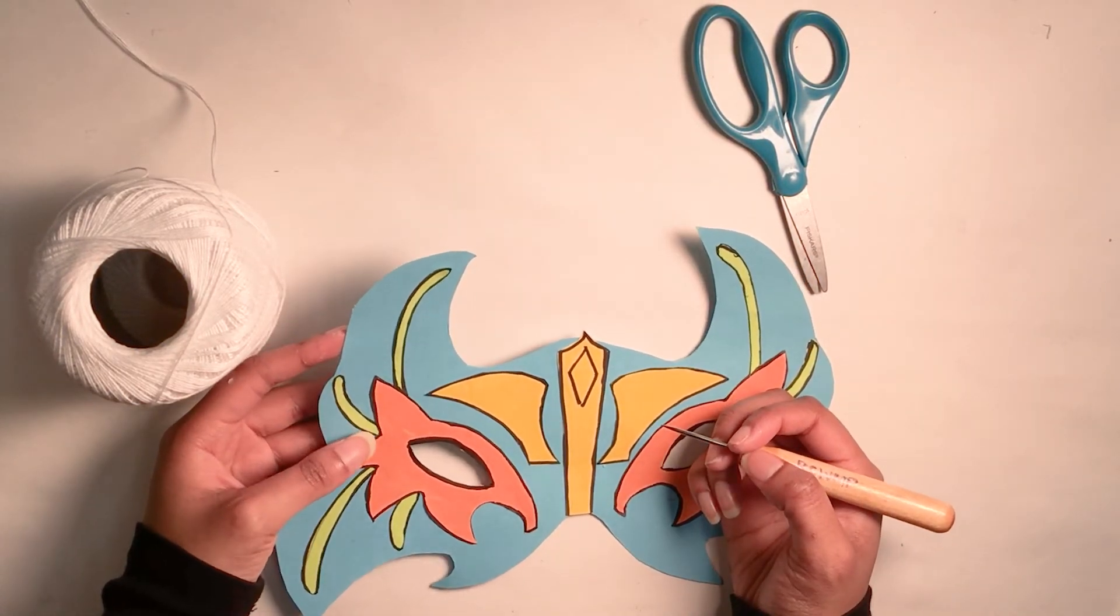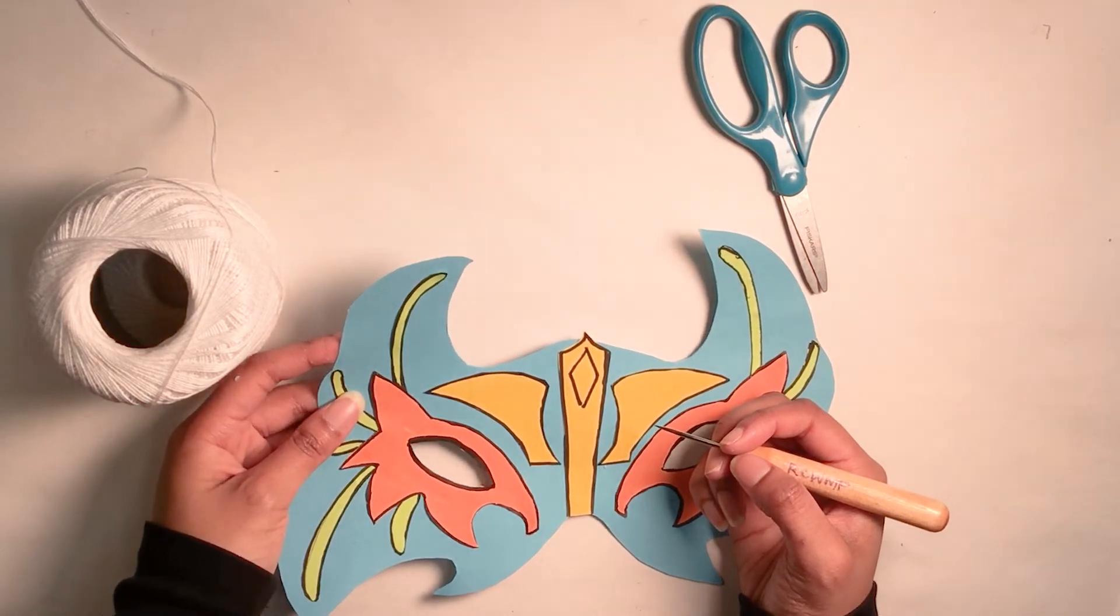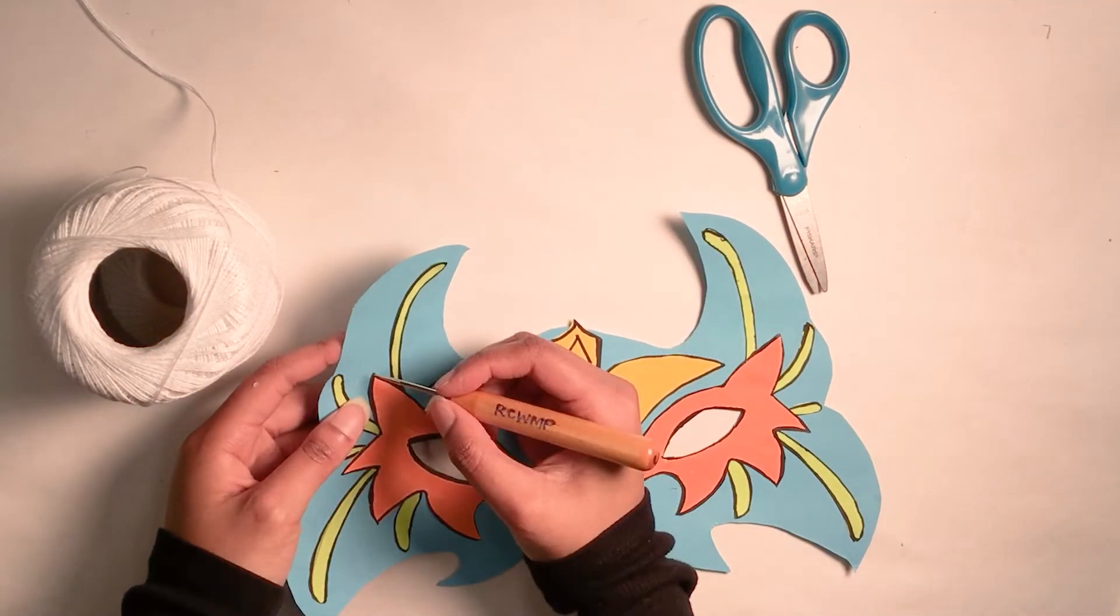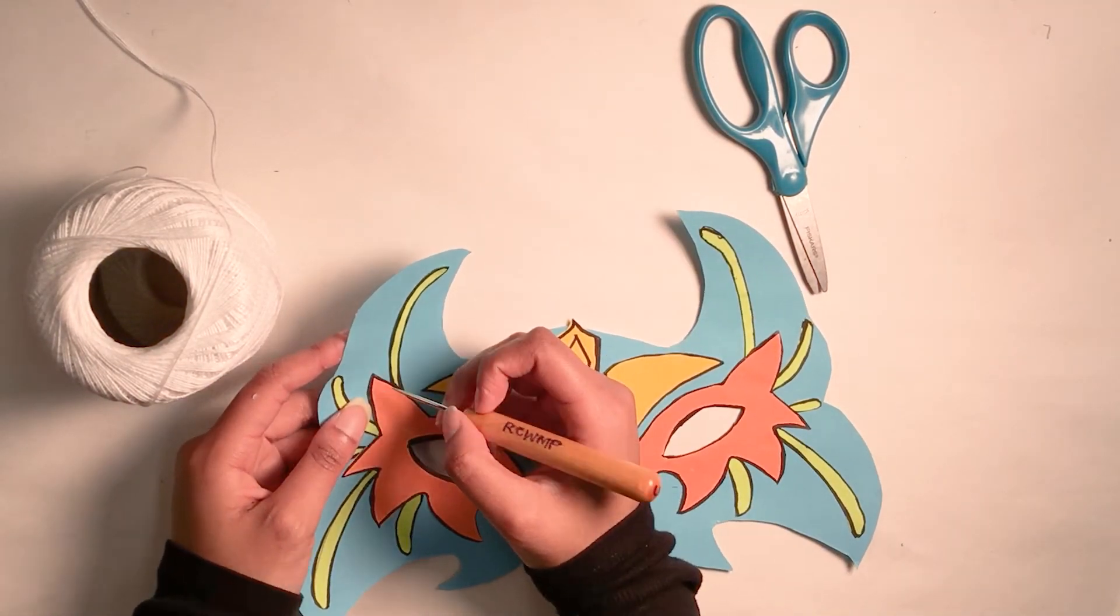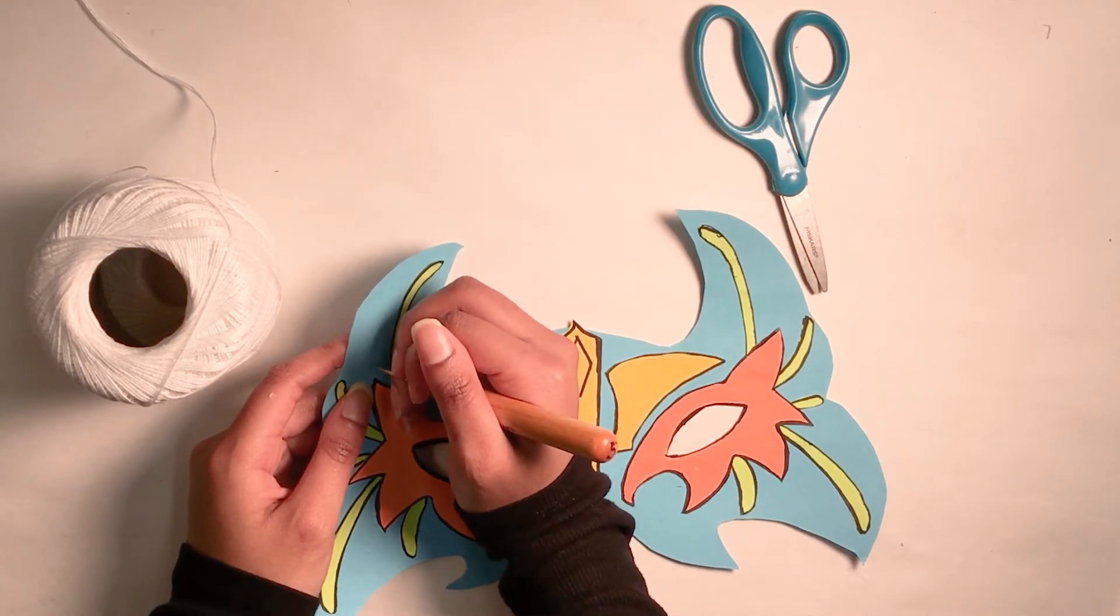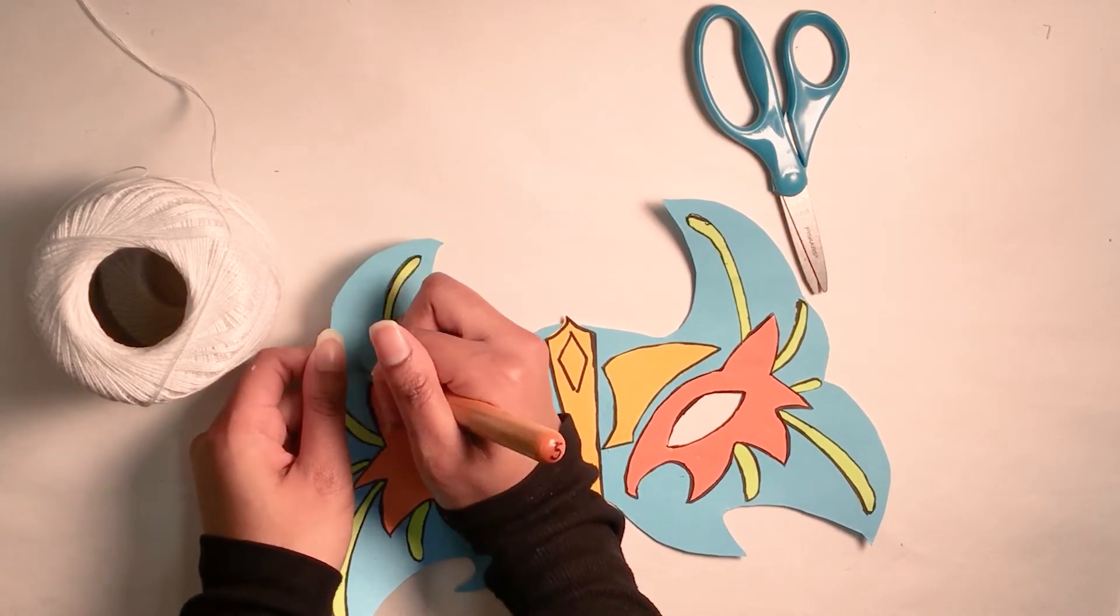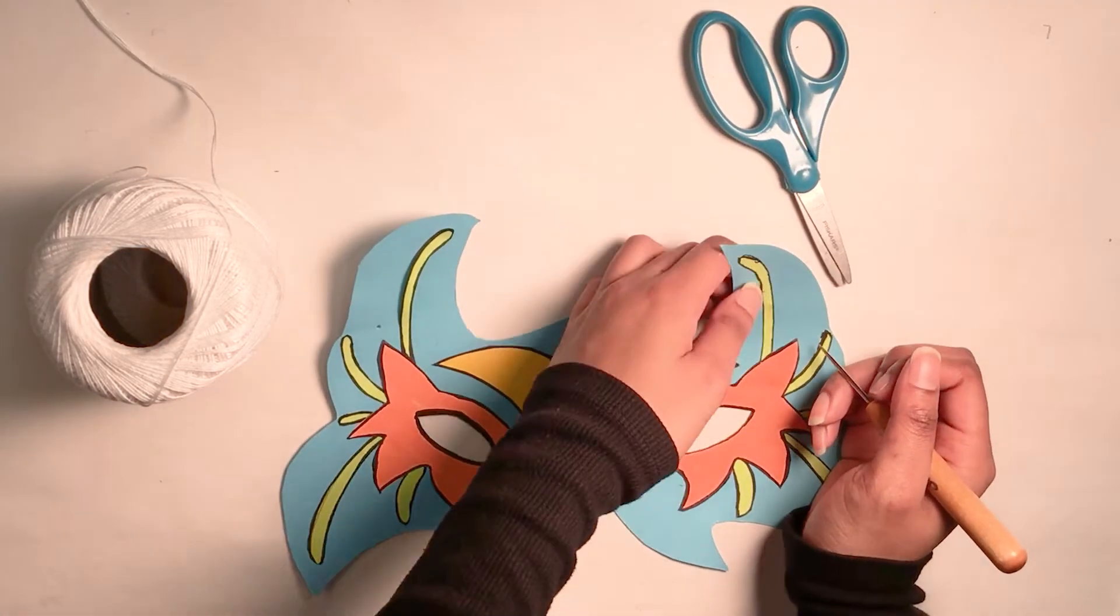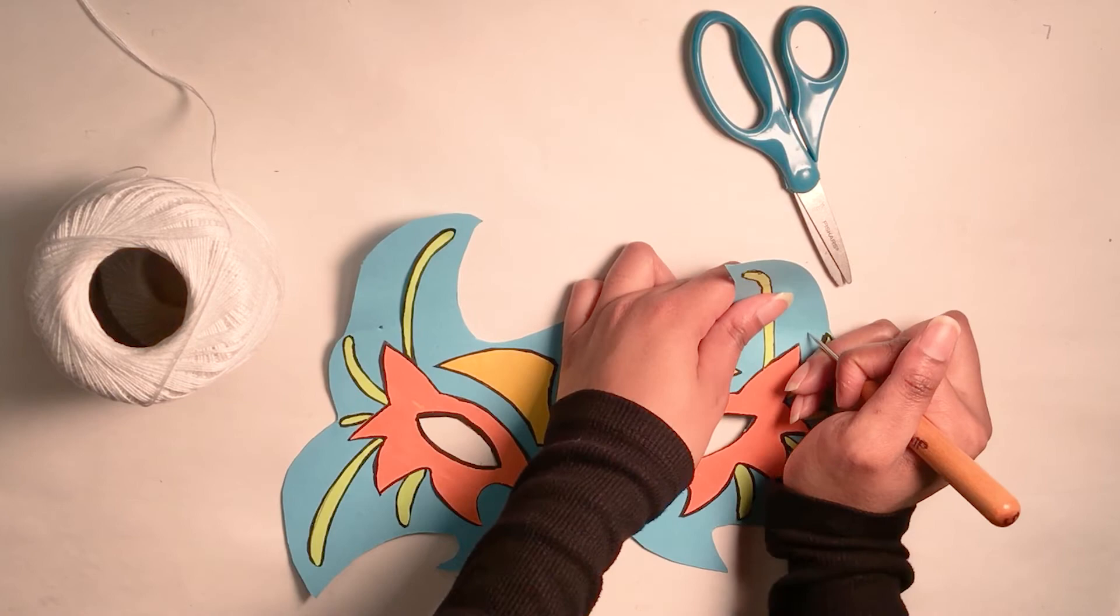So I'm going to place my fingers underneath the mask and then make sure they're not in the place where I'm going to press and make the hole. I'm going to do the same to the other side.